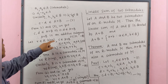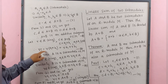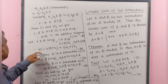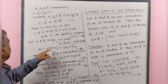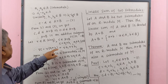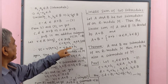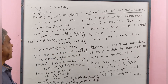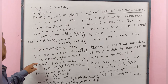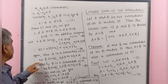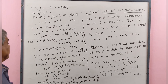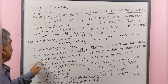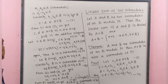Now r times c means r times (a1 plus b1). Therefore r·c equals r(a1 plus b1) equals r·a1 plus r·b1. Since A is a submodule of M, r belongs to capital R and a1 belongs to capital A implies that r·a1 belongs to capital A.